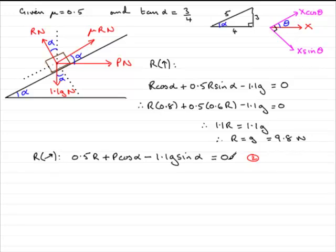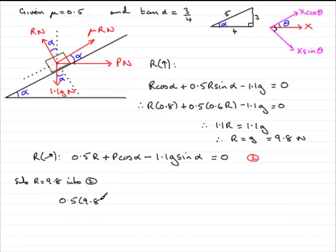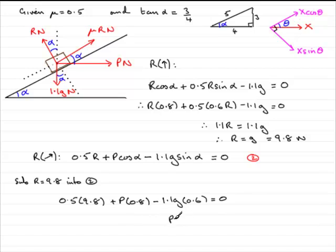Now that we've got R as 9.8N, I've gone back to the resolving equation from before — resolving up the plane — and we substitute 9.8 in for R. Substituting R equals 9.8 into equation 2, we get 0.5 times 9.8 plus P cos alpha — cos alpha was 4/5, so 0.8 — minus 1.1g times sine of alpha, sine of alpha 3/5, 0.6, equals zero. Rearranging this, you'll find that P equals 1.96 newtons.